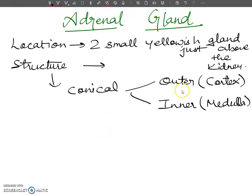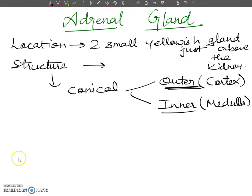These two regions differ in their origin and location. The cortex is the outer region and the medulla is the inner region. They produce different hormones and are independent of each other. Now I want to tell you the names of the hormones secreted from the adrenal cortex.